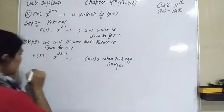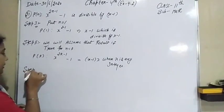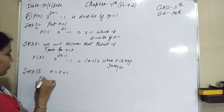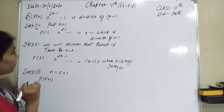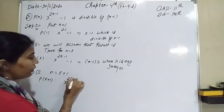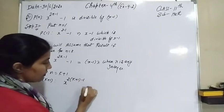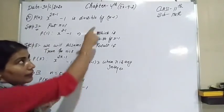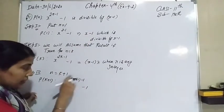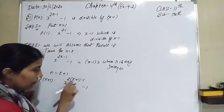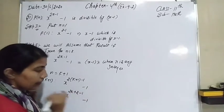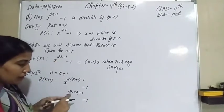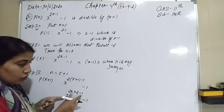After this, in the last step we will prove that the result is true for n equal to k plus 1. So put the value of n equal to k plus 1. P(k+1) is the statement: x raised to the power 2 into (k plus 1), minus 1, minus 1. We have to prove this is also divisible by x minus 1. So firstly we will solve x to the power 2k plus 2, minus 1, minus 1.